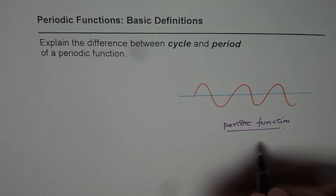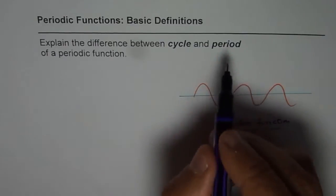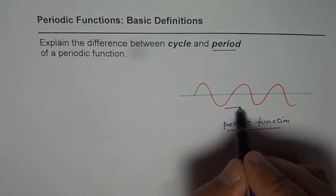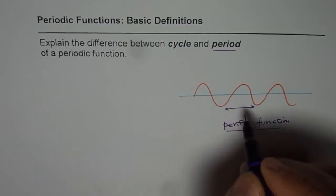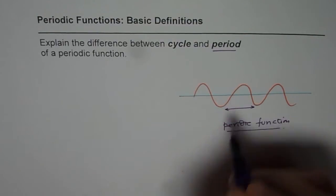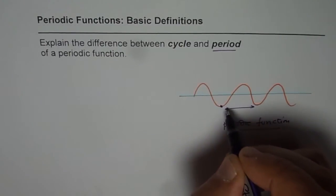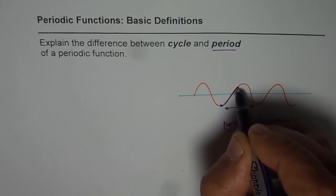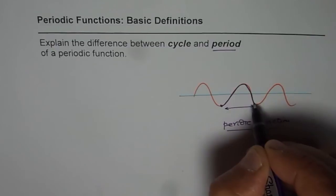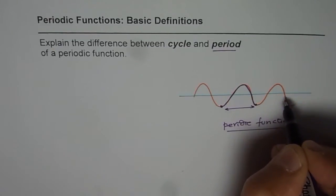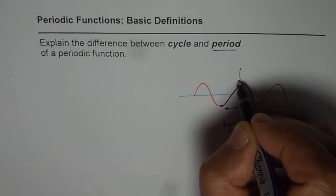Now period is kind of time period. Whenever we say period then we are actually talking about the horizontal distance between two cycles. You understand? What I am trying to say is a cycle is portion of a graph which repeats. So for example here this is one pattern. Now this pattern repeats, correct? So this is called one cycle.